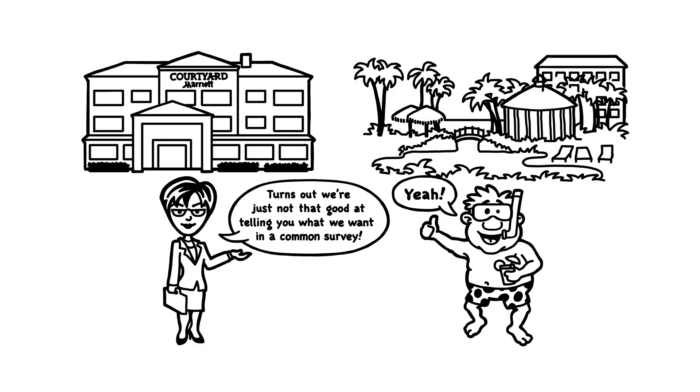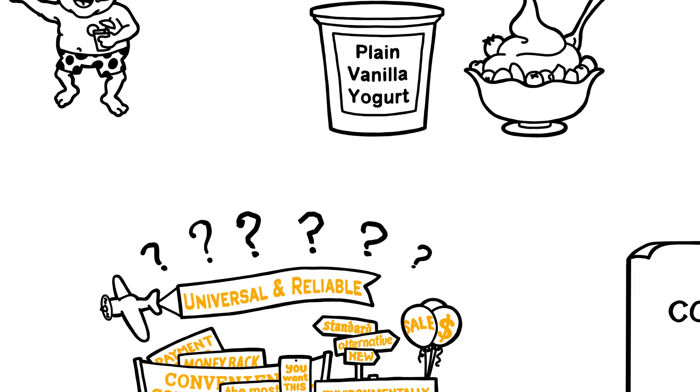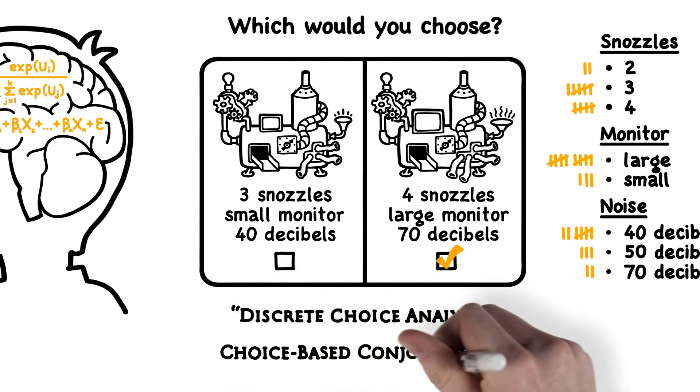Instead, respondents choose from realistic product options like they would in the real world. The most commonly used conjoint analysis approach today is Choice Based Conjoint, CBC.